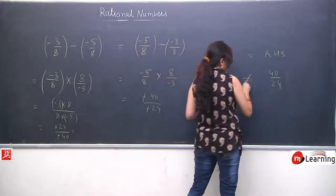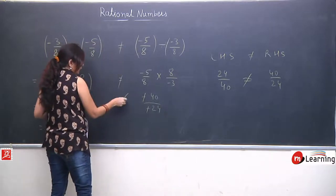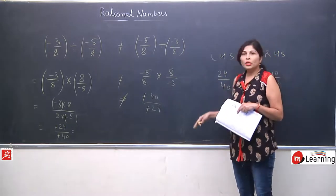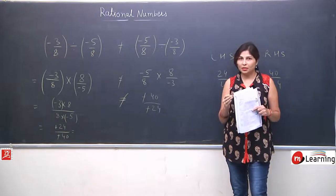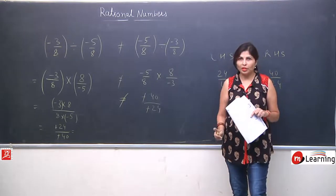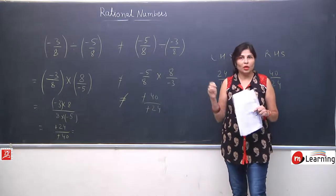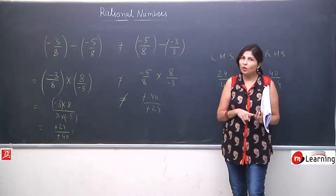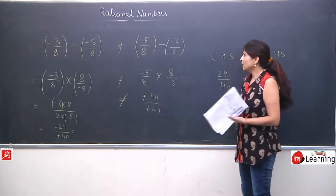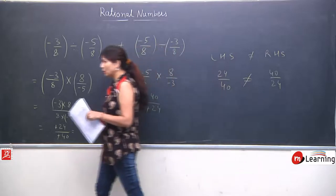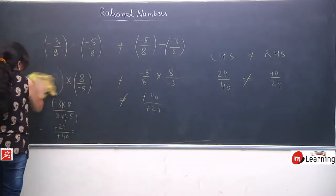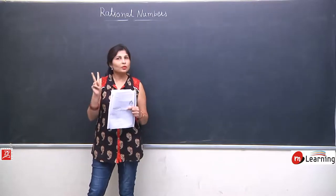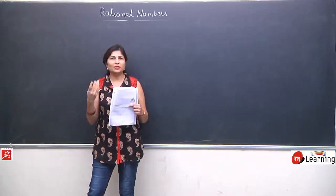Are they equal? No. Means hame verify karna tha and it is not verifying because these two terms are not equal. So, the conclusion: commutative law for rational numbers — we have four kinds of operations: plus, minus, multiplication, and division. Commutative law follows for addition and multiplication, but not for subtraction and division. Subtraction aur division mein law applicable nahi ho raha — kewal plus aur multiplication mein hota hai.